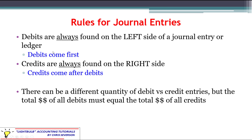Credits are always on the right side. They're indented and they come after all of our debits. This is going to become more important in this video because now we're going to see we might have two debits or one credit. There can be a different quantity of debit versus credit entries — we could have two debits and one credit — as long as the total dollars of all of those debits equal the total dollars of all of the credits.